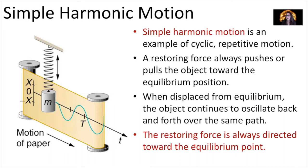Here we have an example of simple harmonic motion — a mass attached to a spring. When you put the mass on there and just let it hang, if it's not oscillating up and down, that mass is in equilibrium. But when you displace that mass from its equilibrium position — pull it down and let it go — it's going to oscillate up and down and execute simple harmonic motion.